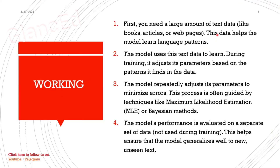How does it actually work? First, you gather a large amount of data — from books, articles, or web pages — and feed it to the model so the model learns the patterns hidden in it. During training, the model adjusts the parameters to find different patterns in the text. To adjust these parameters, it uses two techniques.